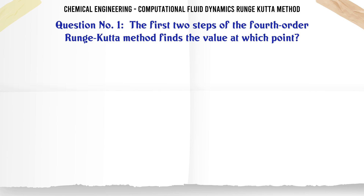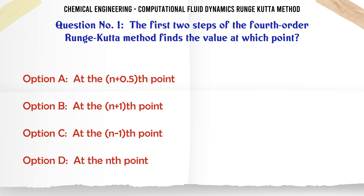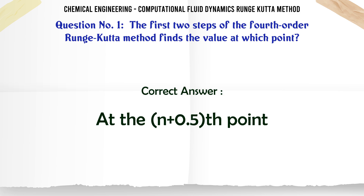The first two steps of the 4th order Runge-Kutta method finds the value at which point? A: at the n+0.5th point. B: at the n+1th point. C: at the n+1th point. D: at the nth point. The correct answer is: at the n+0.5th point.